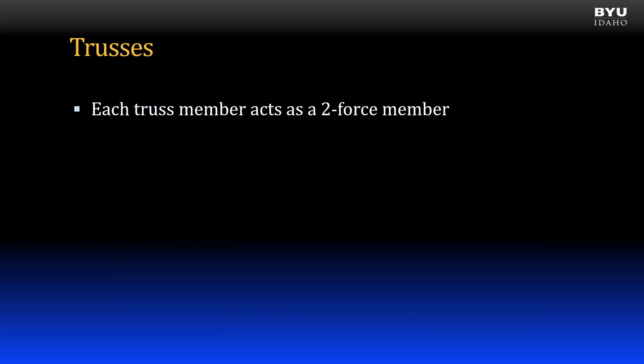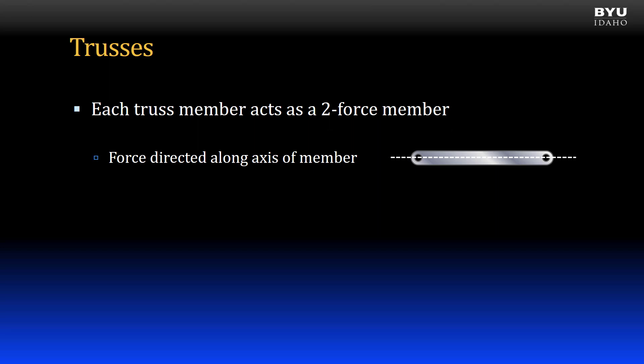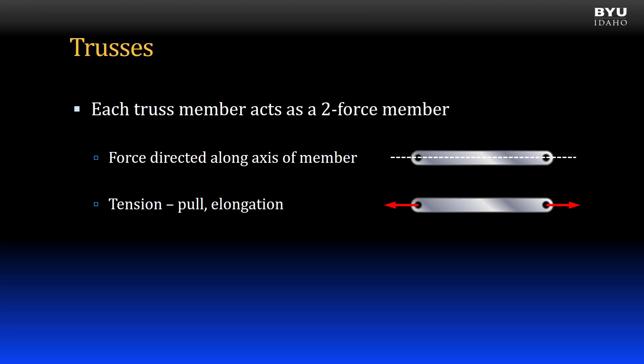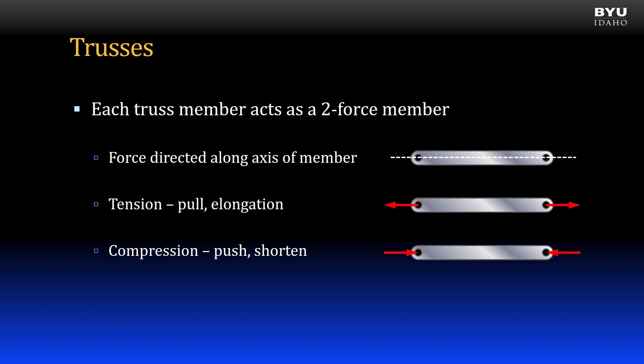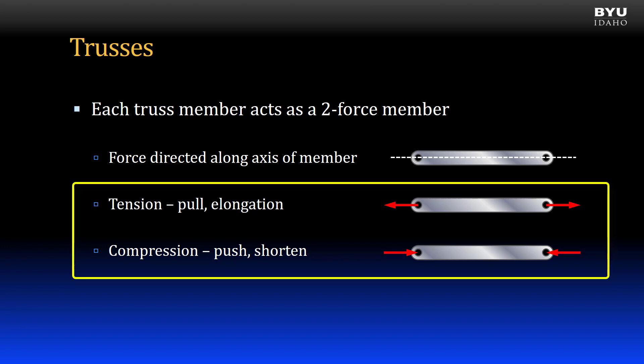If the three assumptions previously discussed are true, then each truss member acts as a two-force member. Recall that this means the forces on each end of the member are equal and opposite and are directed along the axis of the member. The forces on the member cause tension if they pull on each end, acting to elongate the member. The forces cause compression if they push on each end, acting to shorten the member. These are the only two options.